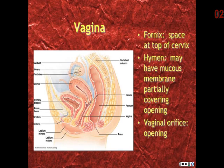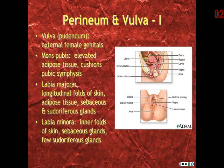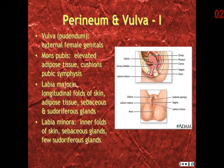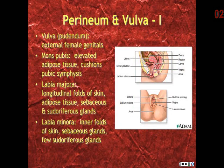The vaginal orifice is the opening to the canal. The vulva, or pudendum, is the term for the external female genitals. Above the pubic symphysis is an elevated area of adipose tissue called the mons pubis, to cushion the pubic symphysis. The labia majora are longitudinal folds of skin containing adipose tissue, which also have sebaceous and sudoriferous glands.